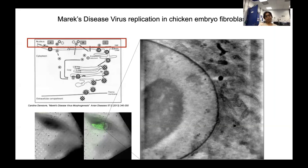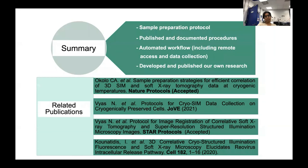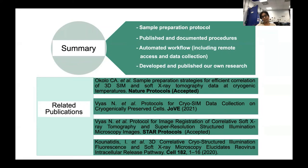The objective of this project is to find cell-to-cell transmission of Marek's disease virus in vitro. In summary, B24 has optimized sample preparation protocols and published and documented all the procedures. B24 has also automated the workflow, including remote access and data collection, which is very important during a global pandemic, so our user community has definitely benefited from this. B24 has also developed and published its own research, and here I have mentioned some recent publications — you can get the full list from our B24 website.